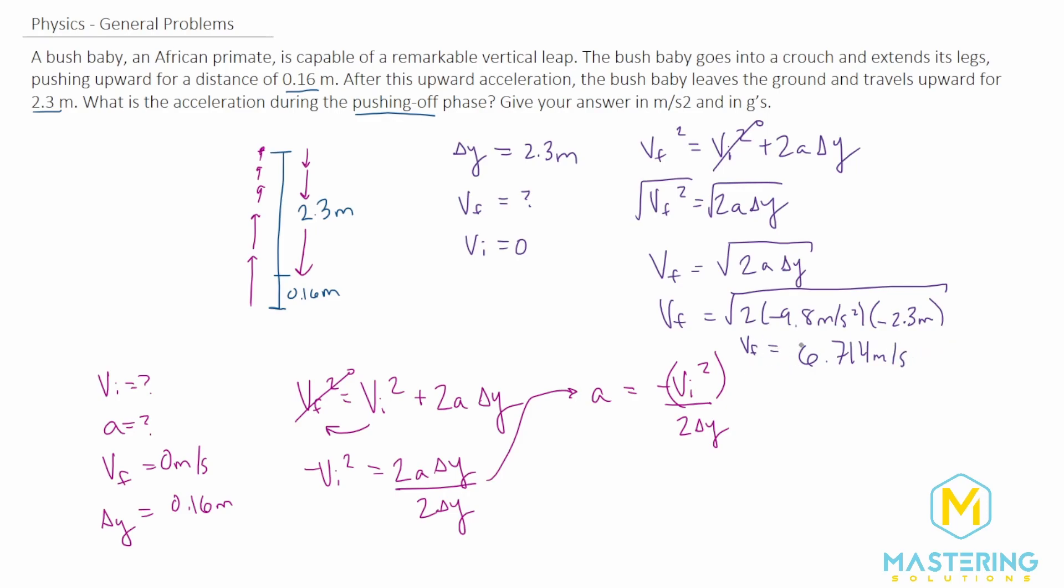Now this velocity is the initial velocity for this part of the equation. The initial velocity coming up will be the exact same when it comes down to this point. So the velocity right here is the exact same for both.